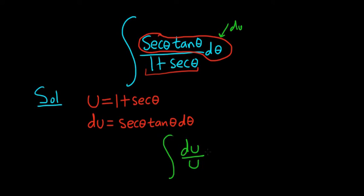And this is a really familiar formula, right? Whenever you have du over u, that's simply the natural log of the absolute value of u plus our constant of integration c.